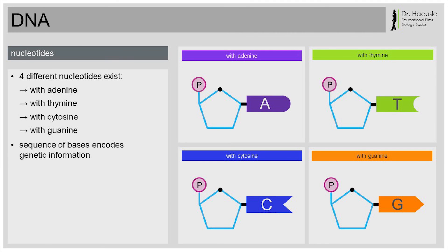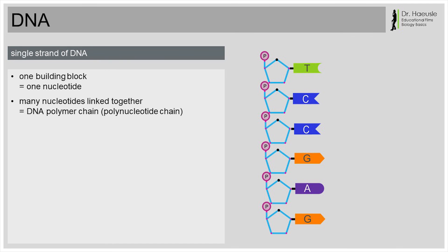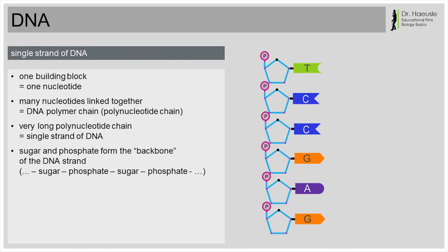Because there are only four different bases in DNA, there are also only four different nucleotides. Many nucleotides are linked together to form a single line, a chain. This chain is called DNA polymer chain, or polynucleotide chain. This is easy to remember. Poly means many, so a polynucleotide chain is a chain made up of many nucleotides. Yes, and a single strand of DNA is simply a very long polynucleotide chain. Sugar molecules and phosphate groups form the backbone of the single strand of DNA, to which the bases are attached.